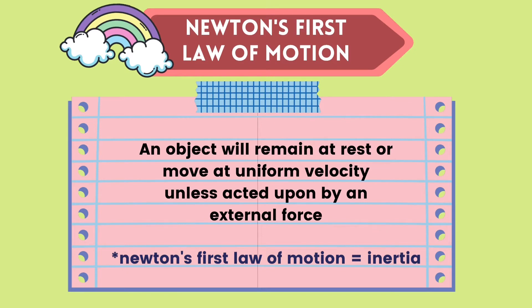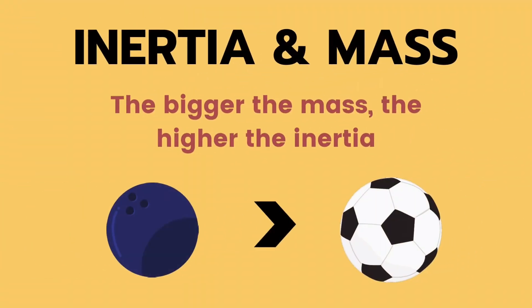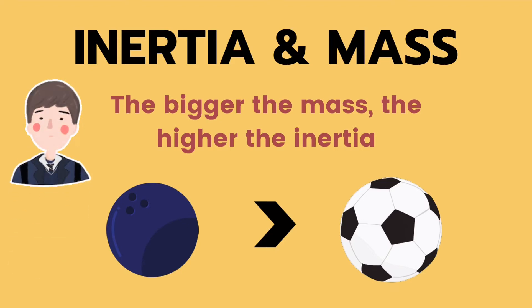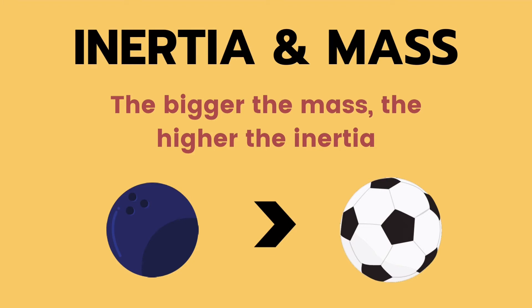When we're talking about inertia, an important thing to know is its relation with mass. The inertia of an object is only affected by its mass. The bigger the mass of the object, the higher the inertia. For example, this bowling ball has a higher inertia than the soccer ball because the bowling ball is heavier and has a bigger mass. An adult person would have a higher inertia compared to a baby because the adult is heavier. This is the most important thing for you to know about the concept of inertia.